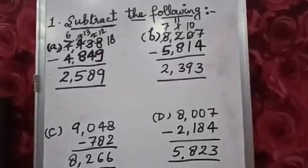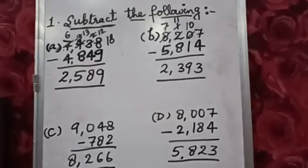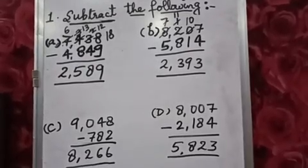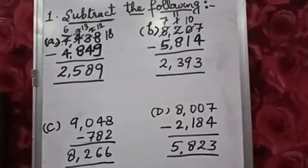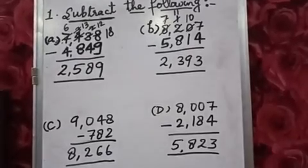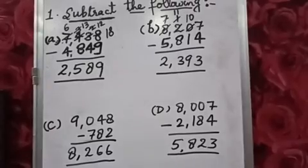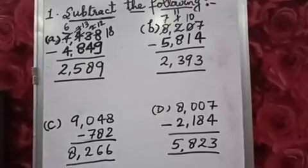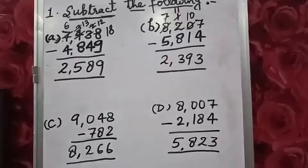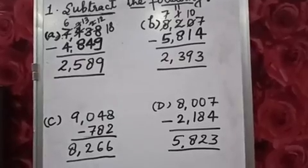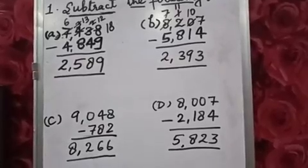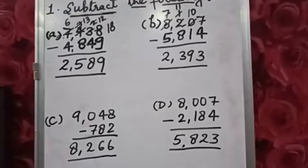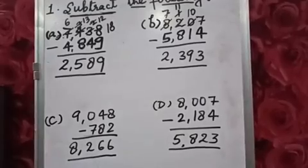Now let's see question C. Question C is 9,048 minus 782. First of all we will minus 2 from 8. We will get 6.